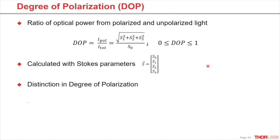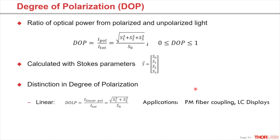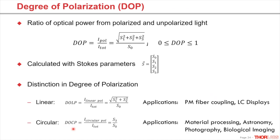There is a further distinction in degree of polarization: the degree of linear polarization, which is the ratio between the linearly polarized light component to the total power. This value is important in applications for PM fiber coupling or liquid crystal displays. There is also the term degree of circular polarization, which is the ratio of circularly polarized light to the total power. The necessity for perfectly circular polarized light can be found in applications for material processing, astronomy, photography, or biological imaging.